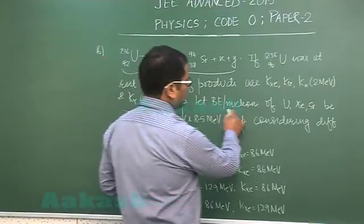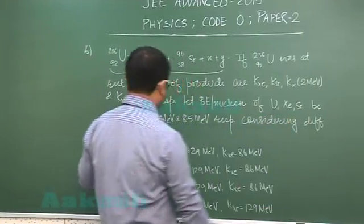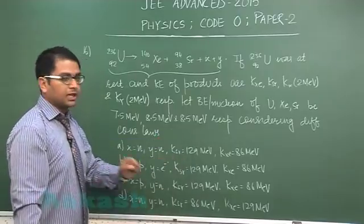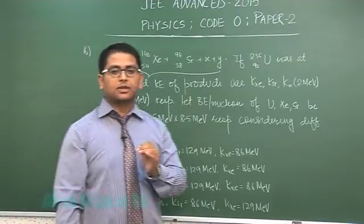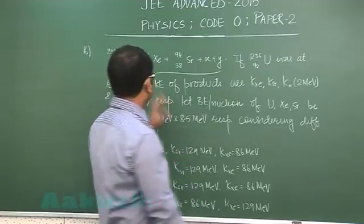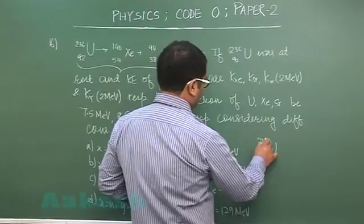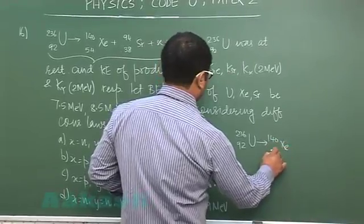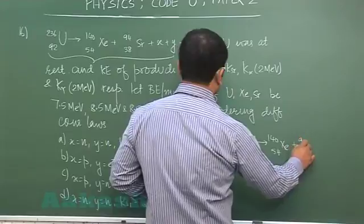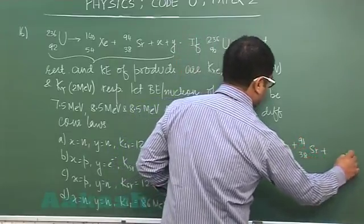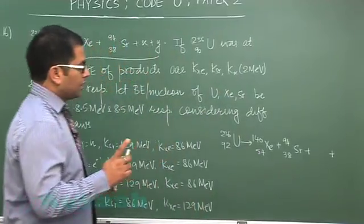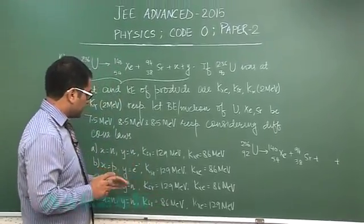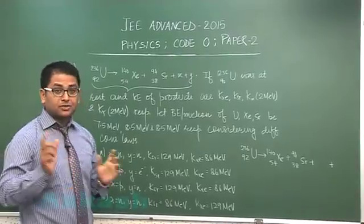The binding energy per nucleon of uranium, xenon, and strontium are given as specific values. Considering different conservation laws, we need to choose the correct option. The first rule we apply is conservation of charge. For U-236 (92), we have Xe-140 (54) plus Sr-94 (38) plus two additional particles, and the total mass number and charge number must be conserved.